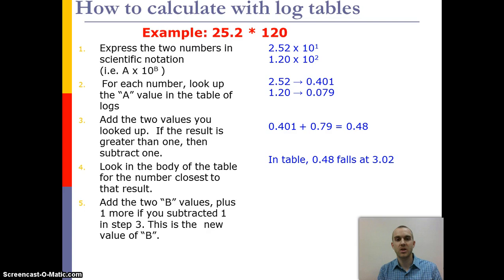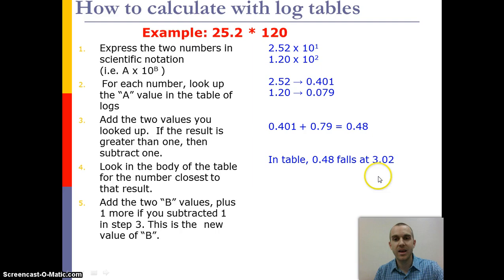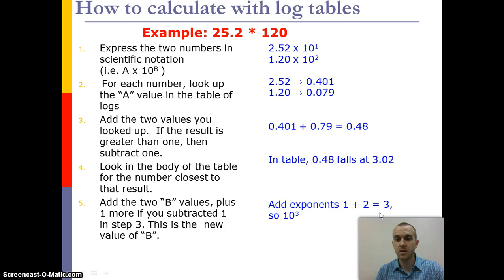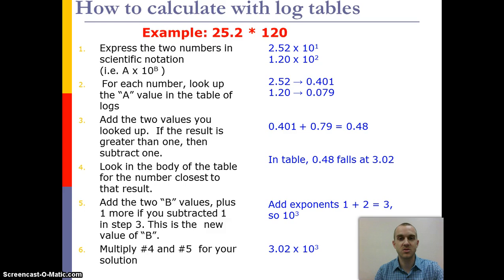Next, add the two B values — the two exponents: 10 to the first and 10 squared. If you had needed to subtract 1 earlier, like if the result had been 1.48, you would add that 1 back into the exponents. In this case it was 0.48, so just add the two exponents and get 10 to the third. The multiplication ends up being 3.02 times 10 to the third, which you can verify with a calculator by multiplying 25.2 by 120.